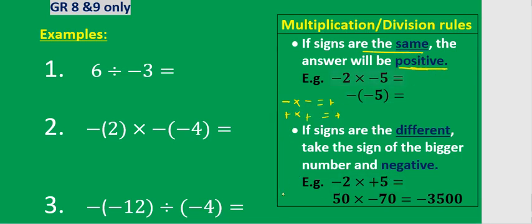If signs are different — for example a negative times a positive — your answer will be negative. For example, negative times negative gives positive, so 2 times 5 gives 10 as a positive. A negative outside the bracket multiplied by a negative inside the bracket gives a positive because the same sign produces a positive.